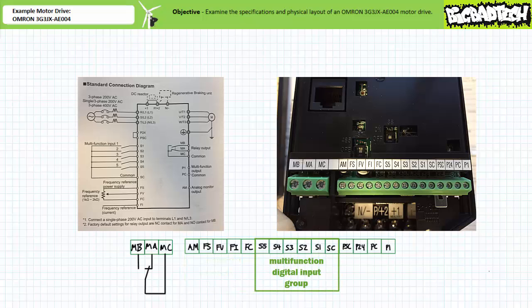The multi-function digital input group consists of five user programmable switched inputs, S1 through S5, as well as a switch common SC shared by all inputs. Depending upon how the motor drive is programmed, these inputs can be assigned different functions, like forward or reverse.